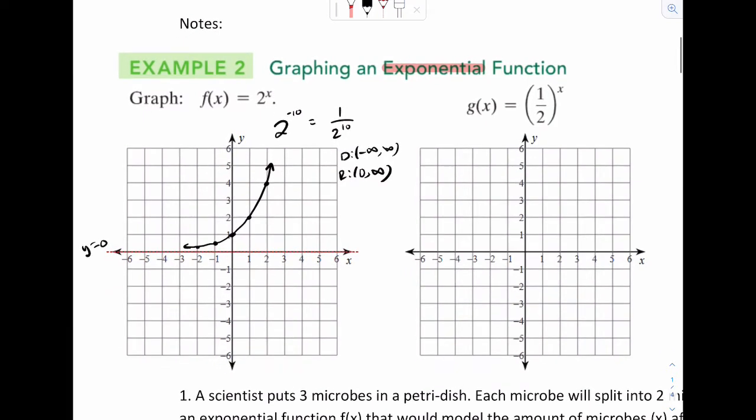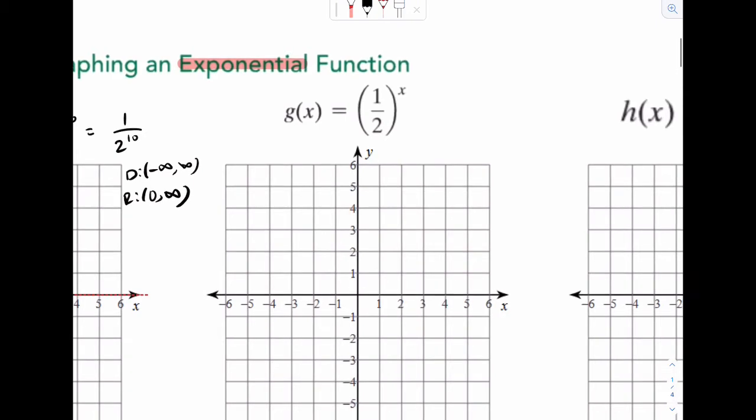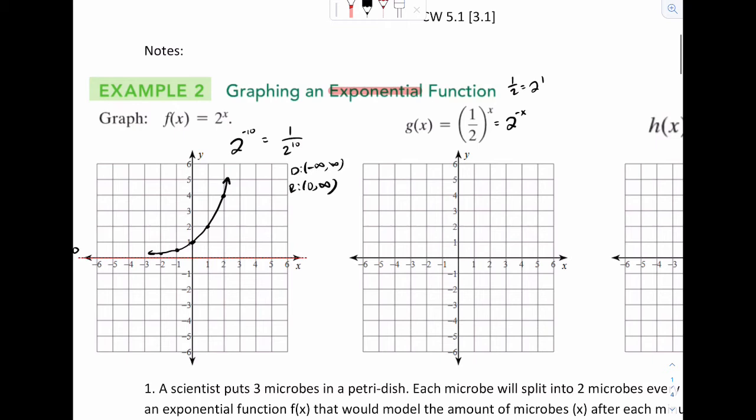For the next graph, we see 1 half to the x. It might be helpful to think of this as 2 to the negative x, since 1 half is equal to 2 to the negative 1. Because that would mean I'm going to take this graph right here and reflect it over the y-axis. So it should look something like this.